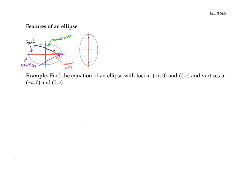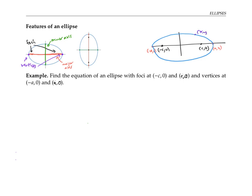An ellipse could be elongated in any direction, but we'll only consider ellipses elongated either in the horizontal direction or the vertical direction. Let's find the equation of an ellipse whose foci are at (−c, 0) and (c, 0), and whose vertices are at (−a, 0) and (a, 0). This will be an ellipse elongated in the horizontal direction. For any point (x, y) on the ellipse, the sum of the distances from (x, y) to the first focus plus its distance to the second focus has to be some constant.